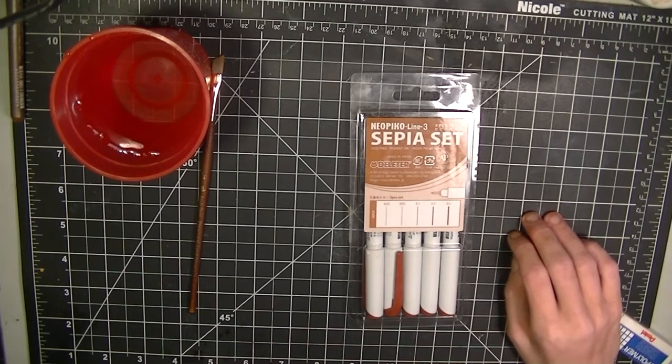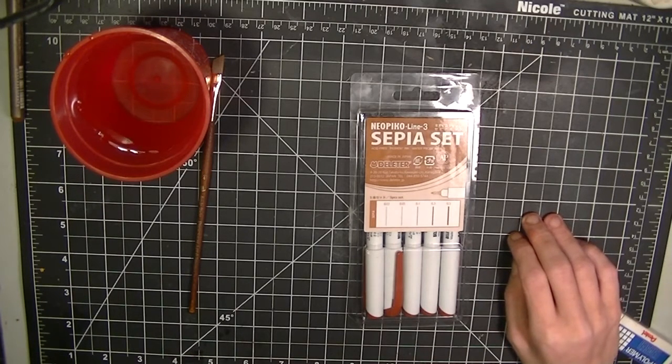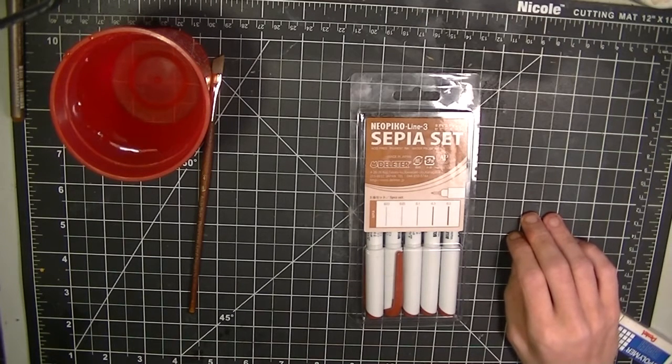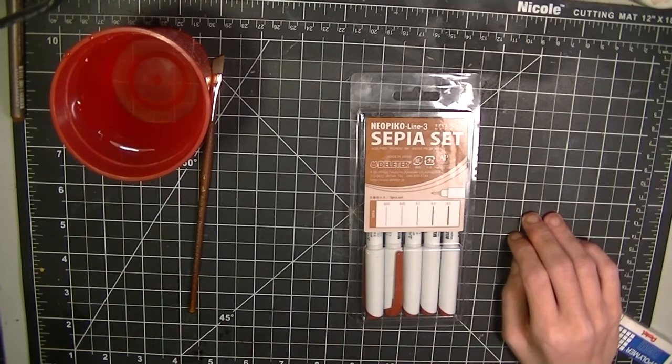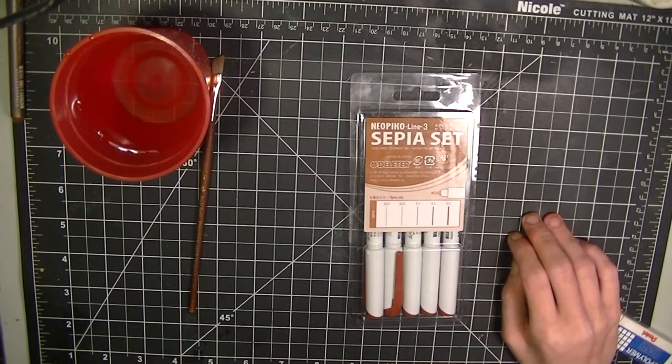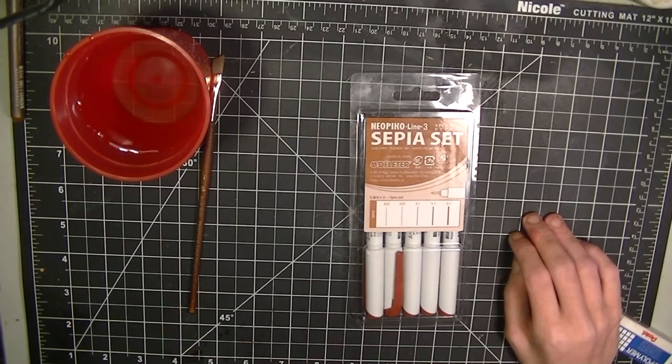They are made by the Deleter Company, which if any of you guys know is really well known for their manga materials. They have inking supplies, screen tones, other stuff for markers and manga that I don't know of because I don't do manga, let's be honest.